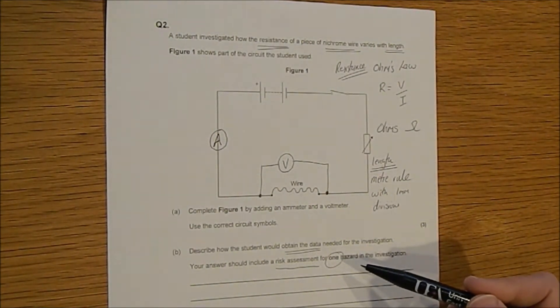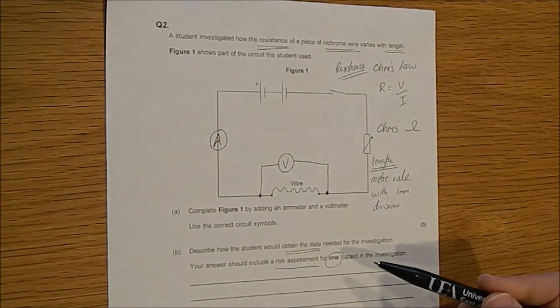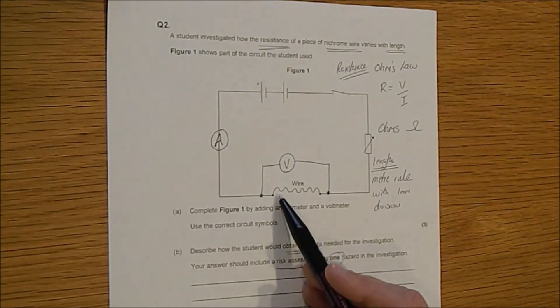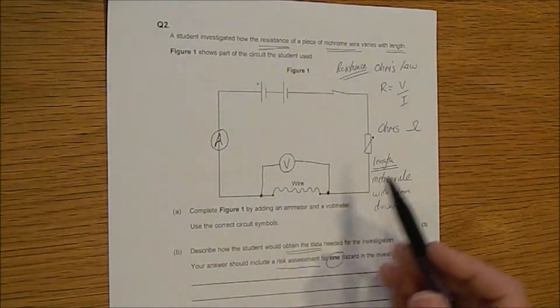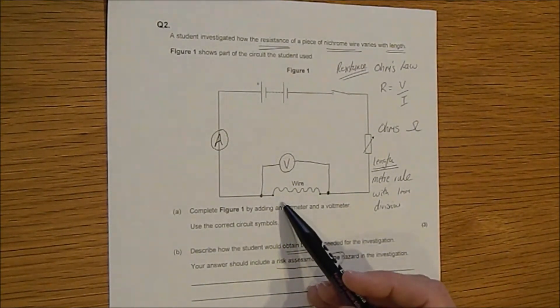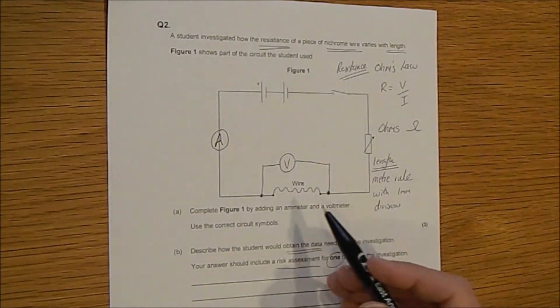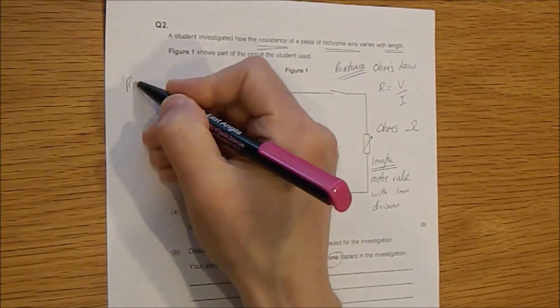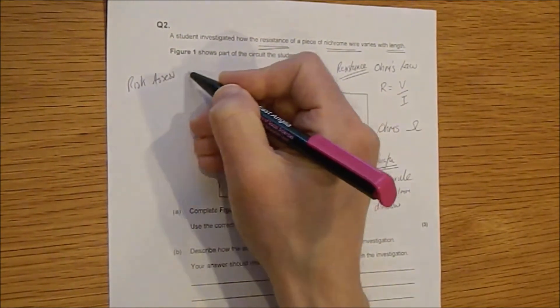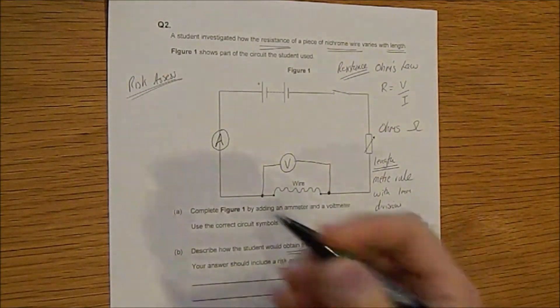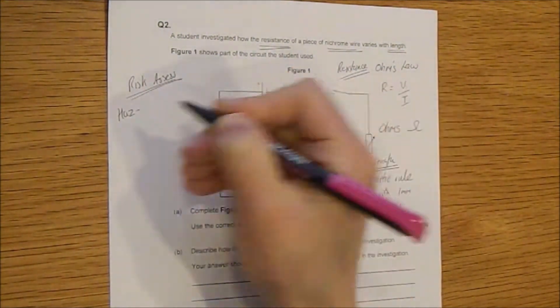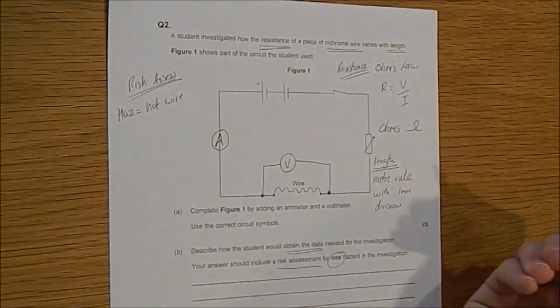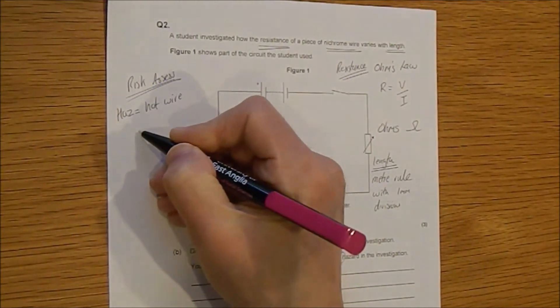What about hazards? So this is a pretty safe investigation. There's nothing terrible going to happen here, except for when the wire gets short, then what happens is we get a lot of current flowing through it because the resistance is low. And that means the wire can get very hot. So let's think a risk assessment. So what's the hazard? So the hazard is a hot wire. And what's the consequence of that? Well, that could cause a burn.